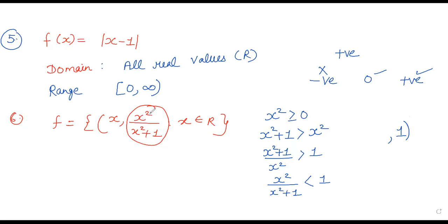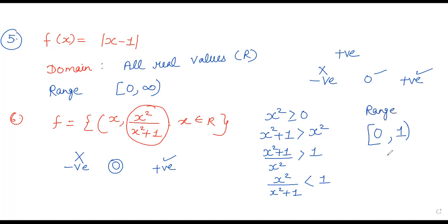Note that x is squared, so even negative values become positive after squaring. This means negative values cannot appear in the range — only 0 and positive values less than 1. If we put x = 0, we get f(0) = 0² / (0² + 1) = 0/1 = 0. So 0 is included. Therefore, the range of this function is [0, 1), starting from 0 and going up to but not including 1. Question No.6 is done. Hope you understood. Thank you for watching the video.